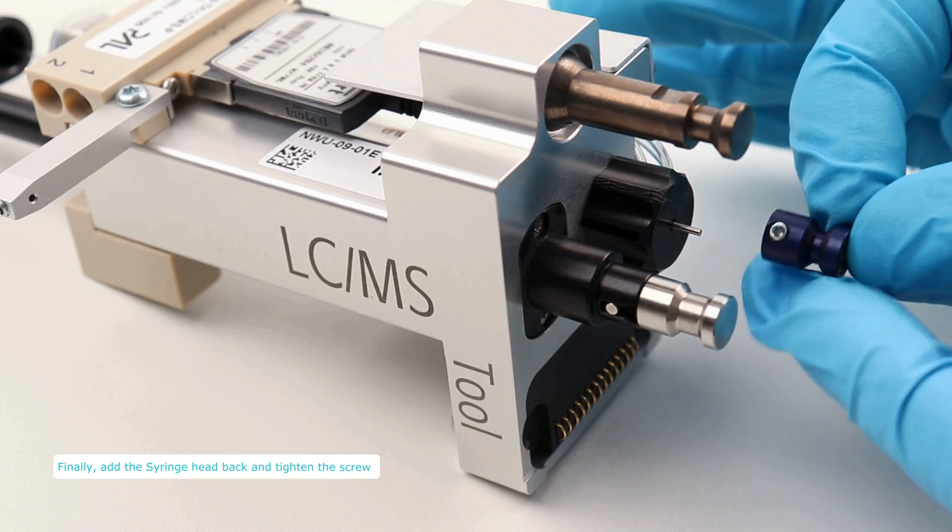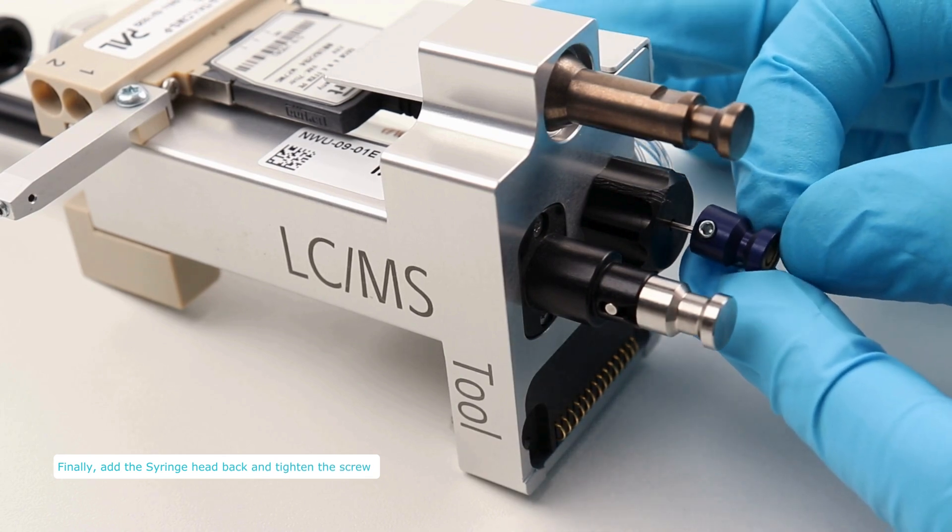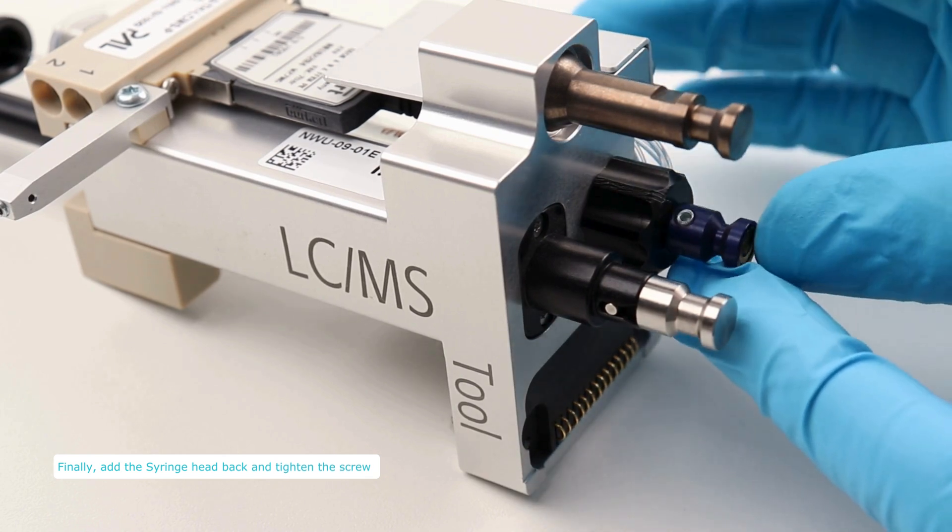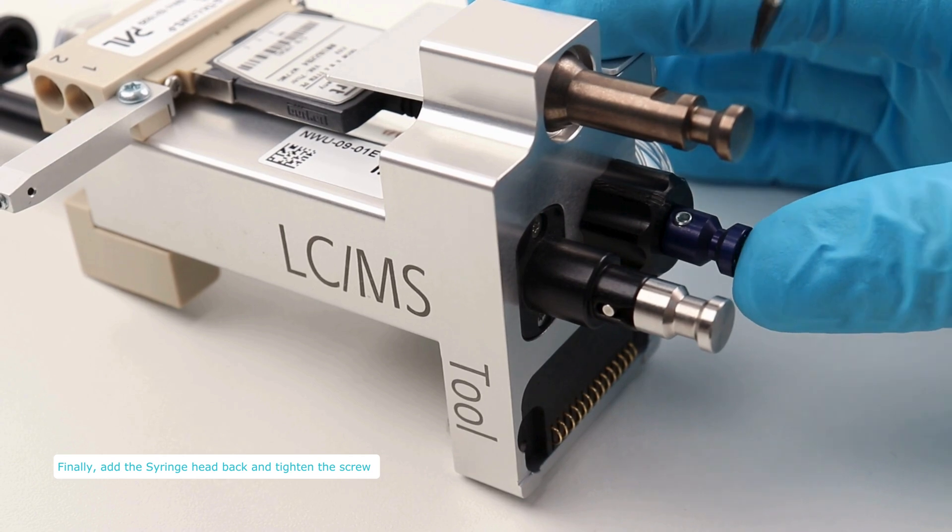Finally, attach the syringe head and tighten the screw. You can now put the LC-MS tool with its new syringe back to your PAL system.